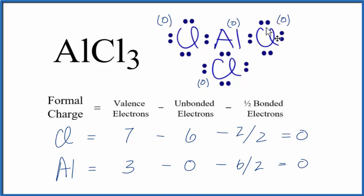you'll find that your formal charges are not 0. And when we have 0 formal charges, that tells us this is the most favorable Lewis structure for AlCl3.